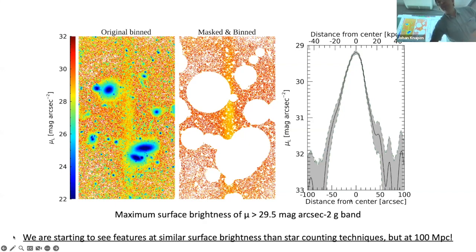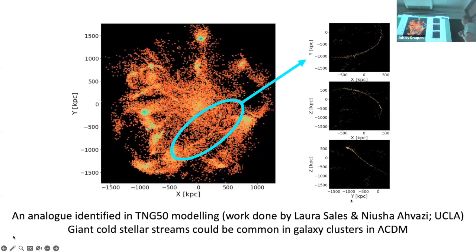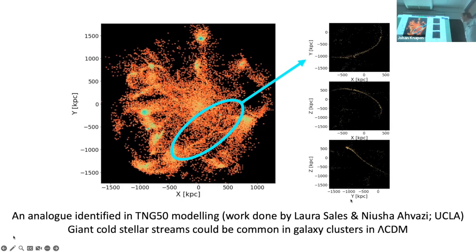Could it occur in modeling? Two of our colleagues checked the TNG50 cosmological numerical modeling and found a feature that looks like our giant cold stream. Especially in the Z-Y projection, this thing looks pretty much linear and also long. So we claim there is an analog in TNG50 modeling, which shows that first of all it's not impossible to have these things, and it also tells us that these giant cold stellar streams could be common in galaxy clusters in Lambda CDM — we just haven't seen them yet because they're so faint and so extended, but we have found the first one.